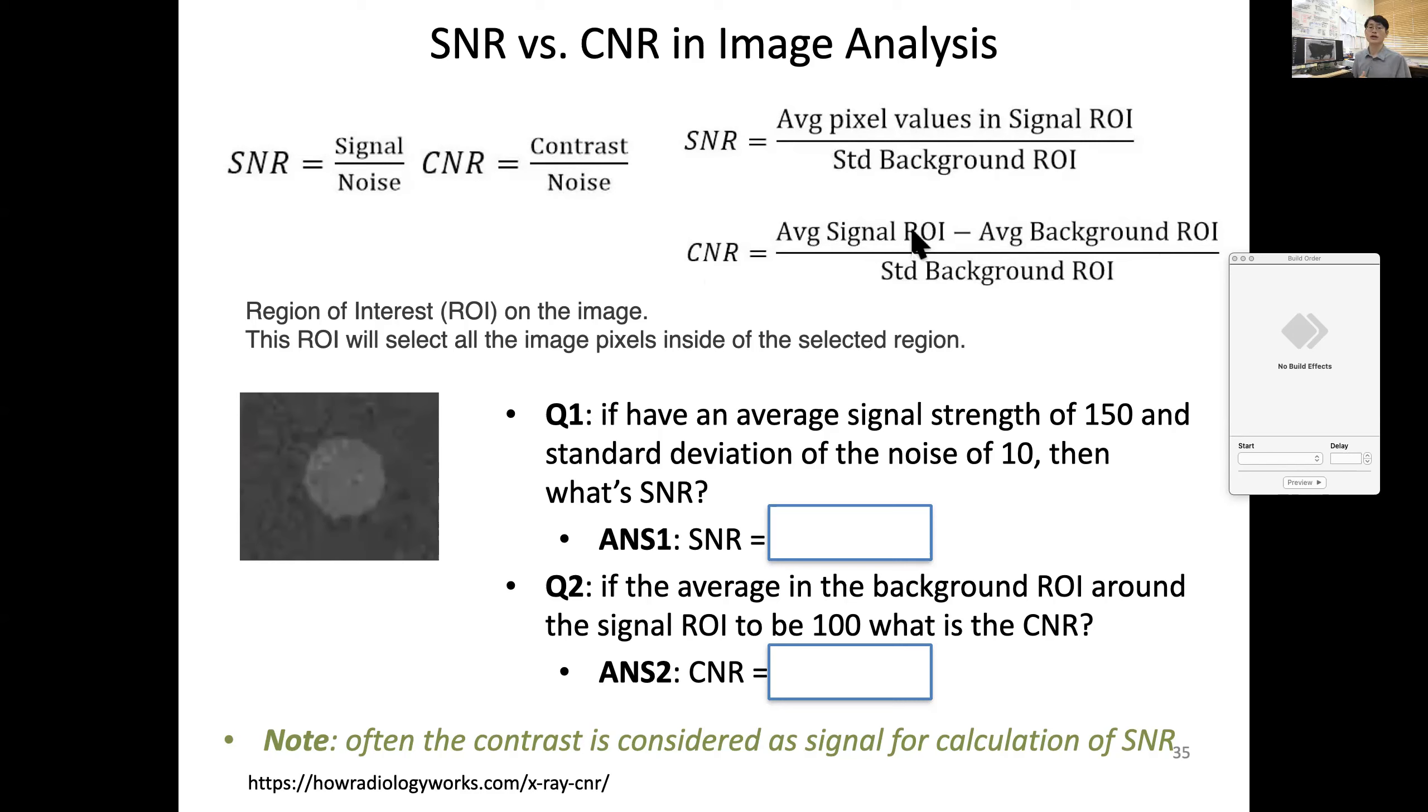To make it even clearer, I brought two examples. You know roughly there are some objects over here but it's kind of noisy. You define your region of interest in the signal and in your background. If average signal strength is 150 and standard deviation of the background is 10, what's the signal-noise ratio? By definition, signal divided by noise is 150 divided by 10, which is 15, pretty high.